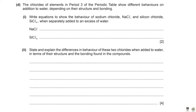We'll finish off with the usual practice questions. The chlorides of elements in period three of the periodic table show different behaviors on addition to water depending on their structure and bonding. Write equations to show the behavior of sodium chloride and silicon chloride SiCl₄ when separately added to excess water. Depending on the type of bonding and structure there will be a different type of behavior: if it's ionic we generally have the compound dissolving in water, separating into ions; if it is covalent we have hydrolysis, an actual reaction with water.